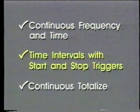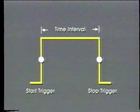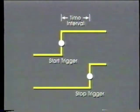Unlike frequency measurements, which have a single trigger event, time interval measurements usually involve both a start and a stop. The triggers may be a rising to a falling edge on one signal, such as a pulse width, a rise time measurement on a single edge, or edges on two separate signals.